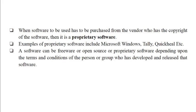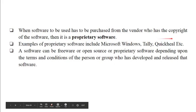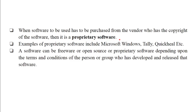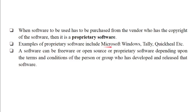When software must be purchased from the vendor who holds its copyright, it is called proprietary software. The software installed on our computer system has a copyright — its source code cannot be edited and the software cannot be distributed to others without legal issues. Examples of proprietary software include Microsoft Windows, Tally, and QuickHeal.